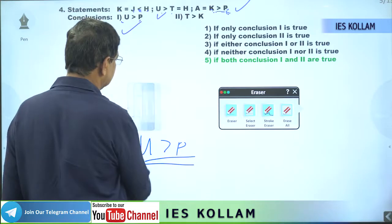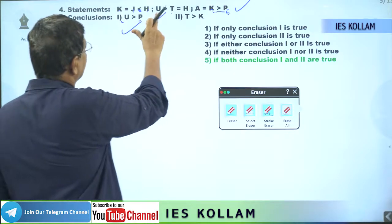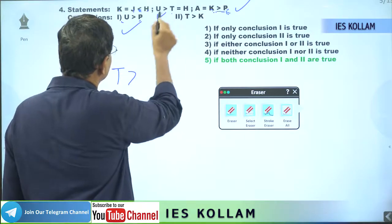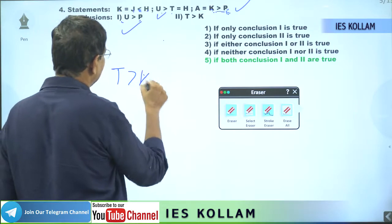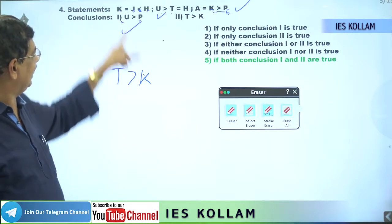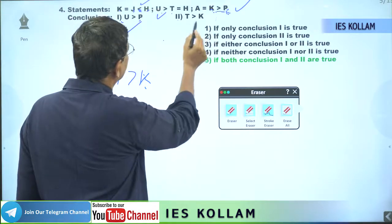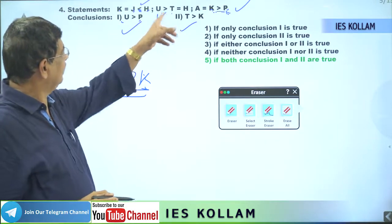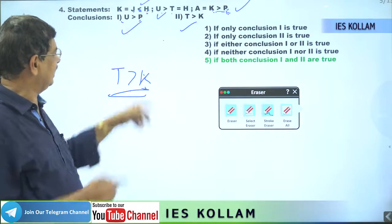Then the second conclusion: t greater than k. Starting from t — t and h are the same, therefore we can convert this h into t. j less than h means h greater than k, so instead of h we can take t: t greater than k. That is correct, and this we can verify — converting h into t gives t greater than k. So both conclusions are true.